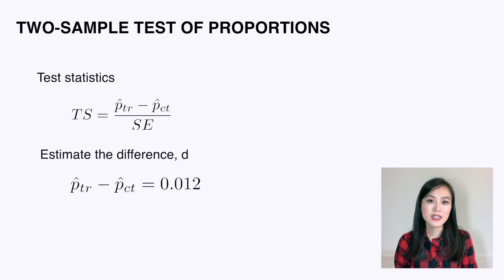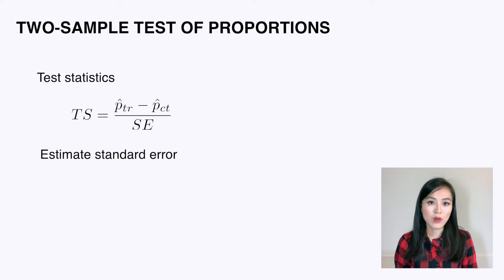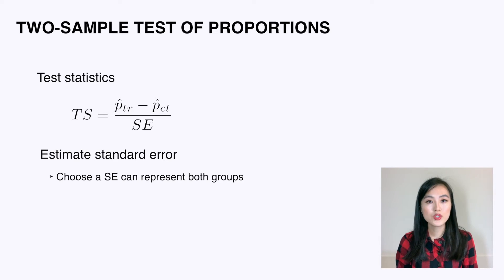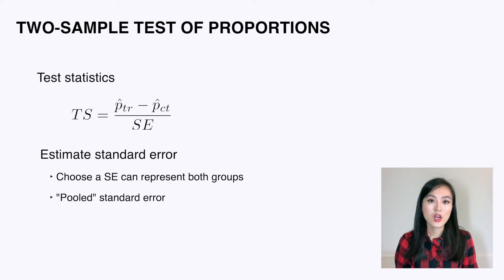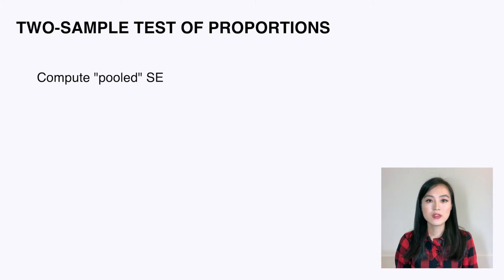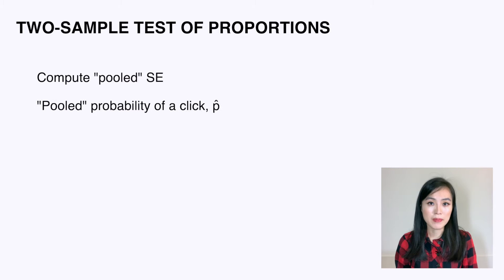The test statistic formula is shown here. I'll estimate d-hat by subtracting p_control_hat from p_treatment_hat, which comes out to 0.012. To calculate the standard error of d-hat, since we have two samples, we need to choose a standard error that gives a good comparison of both. We calculate what is called the pooled standard error.